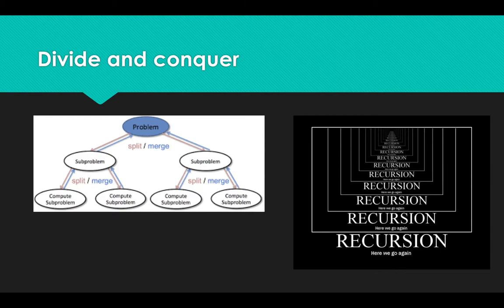One usual case for such divide and conquer is recursion. Recursion means that for big problem, the sub-problem is similar or almost the same as the big problem. So we can see this problem repeat again and again, but the scope gets smaller and smaller, just like the picture in the right side.